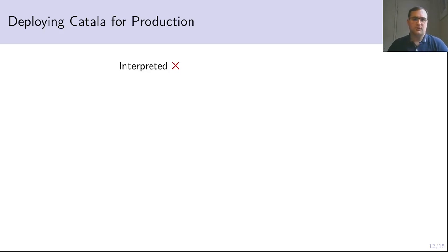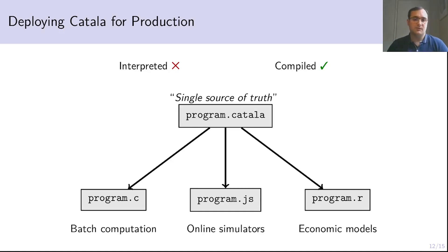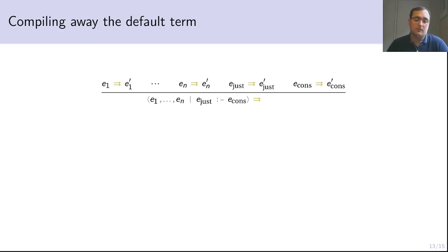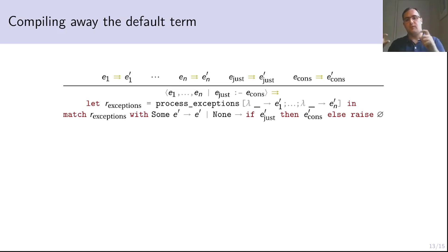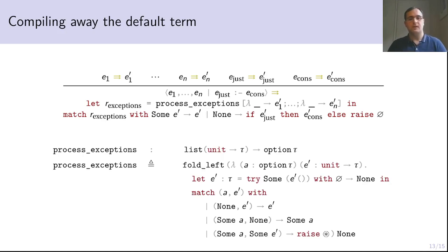The schema we intend for deploying Catala in production is that of a compiled language rather than an interpreted language, with a single source of truth that can be compiled to basically any programming language — C for batch computation, JS for online simulators, or MATLAB for economic models. For that, we need to use advanced techniques of compilation, which basically amount to compiling our default calculus to lambda calculus. We take this default term and process the exceptions one by one, which we have to thunk because otherwise they're going to get evaluated early. Then we see whether an exception triggers or not, and if not, we evaluate the base case with the condition. This process exception helper is a simple fold left with an accumulator that is an option type. You can refer to the paper for more details.